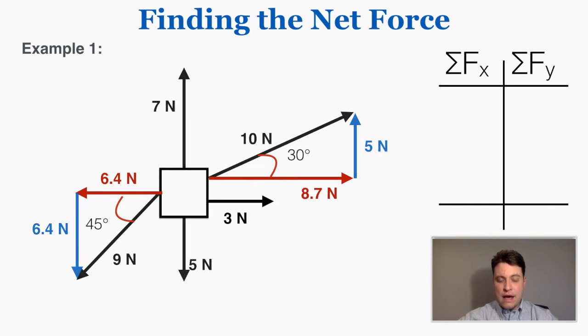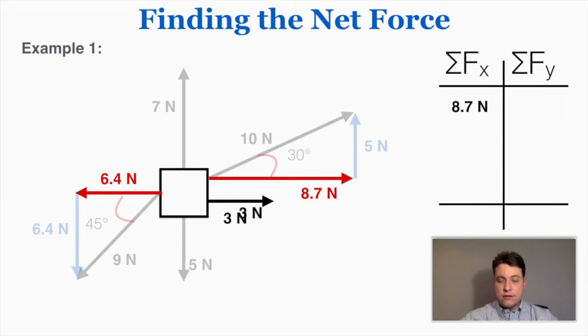Now I'm going to look at just the x components, just the things that are happening in the horizontal direction. I can see here I have an 8.7 and a 3 pointing to the right and a 6.4 pointing to the left. Usually when I do this I call right positive and left negative. So I'm going to record those two numbers to the right as positive and the number pointing to the left as negative. When I add these three things together I get a total net force of 5.3 in the x direction.